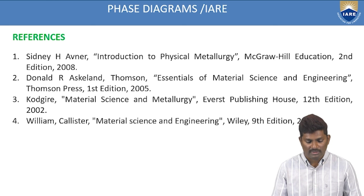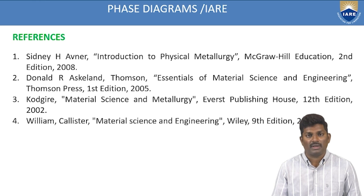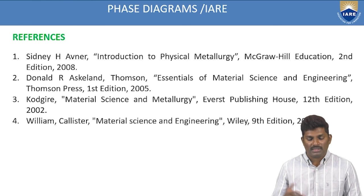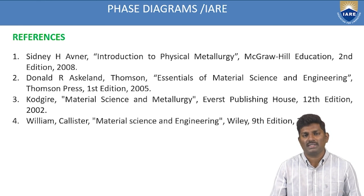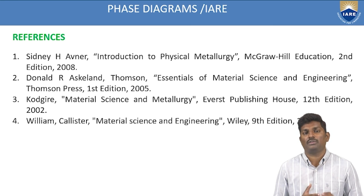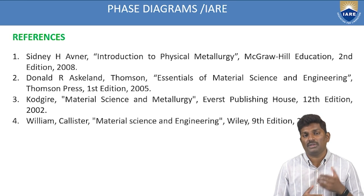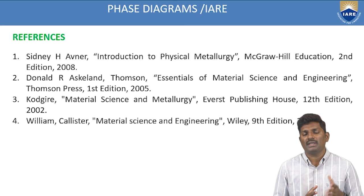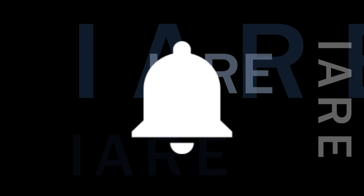For references, you can refer to Introduction to Physical Metallurgy by Tata McGraw-Hill, Essentials of Material Science and Engineering by Thomson Press, Material Science and Engineering by Everest Publications, and Material Science and Metallurgy. These references explain how to find phase diagrams, calculate compositions, find the percentage of phase amounts, and the procedures for single-phase and double-phase points. Thank you for the session — like, share, and subscribe; hit the bell icon for more updates.